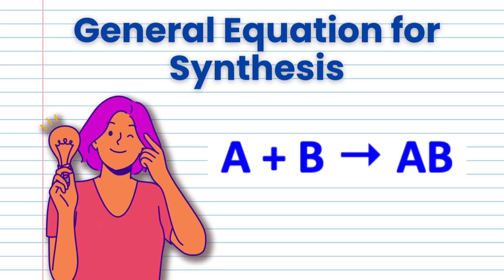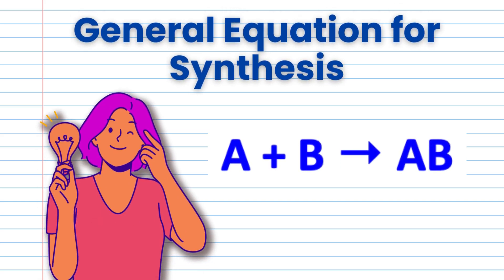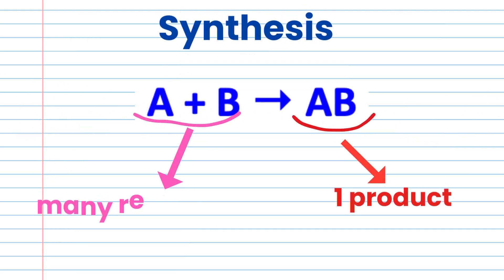Synthesis reaction can be represented as A plus B gives AB. In a synthesis reaction, there is only one product, but you can have many reactants.